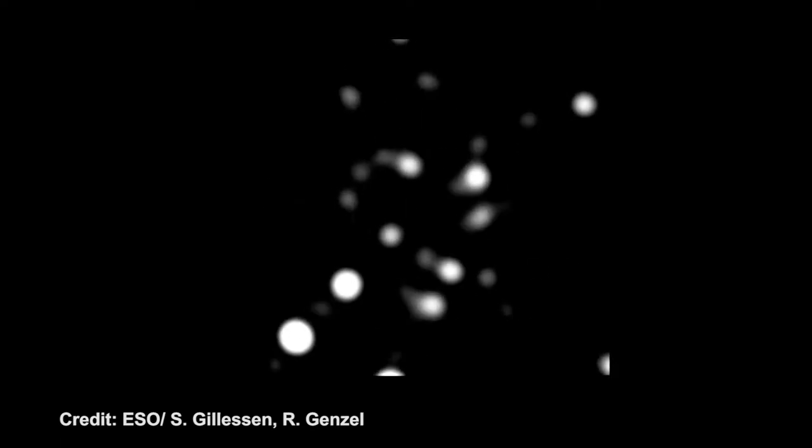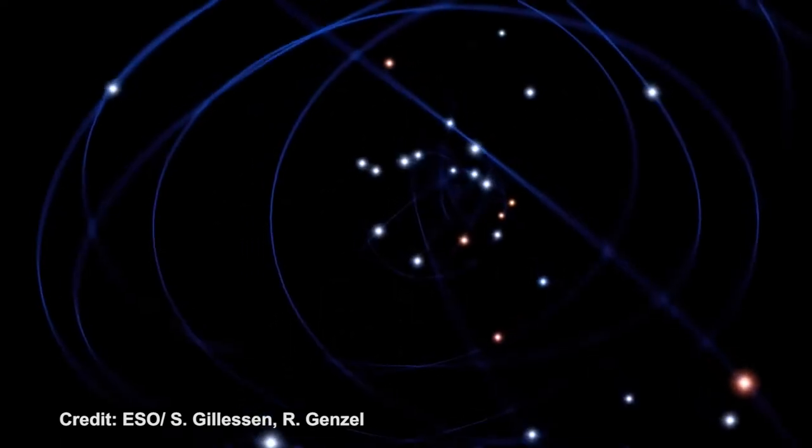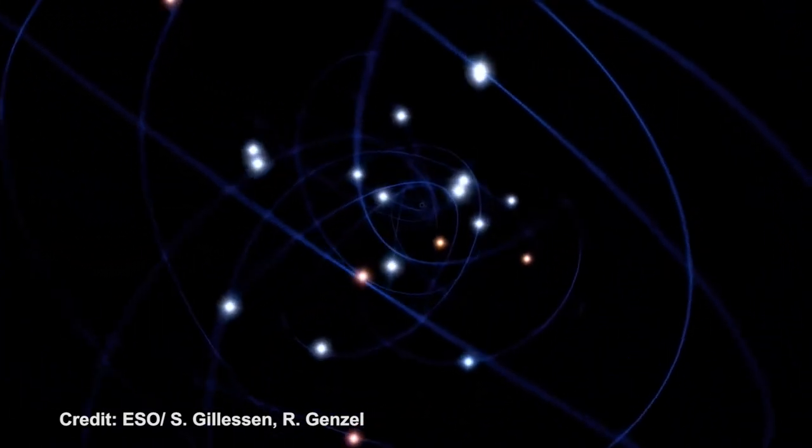But if nothing can escape, not even light, from a black hole's event horizon, how can it be directly detected? Until now, we just have indirect experimental detections, such as the stars orbiting the supermassive black hole candidate Sagittarius A, at the center of the Milky Way.